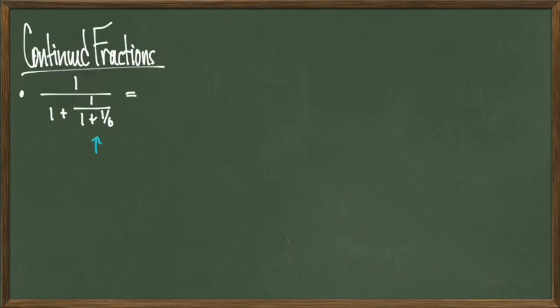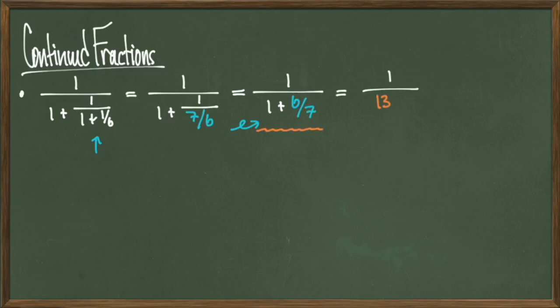So our fraction seems to stop here at 1 plus 1 sixth. If we simplify 1 plus 1 sixth to 7 sixths, we get this quantity: 1 over 1 plus 1 over 7 sixths. Remember when I have a fraction in the denominator, I take it out and flip it. This action will give me 1 over 1 plus 6 over 7. What I can do next is simplify 1 plus 6 over 7 to get 1 over 13 over 7. I flip the fraction in the denominator to get a final answer of 7 over 13 and we're done.